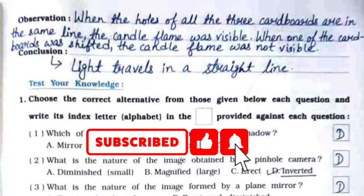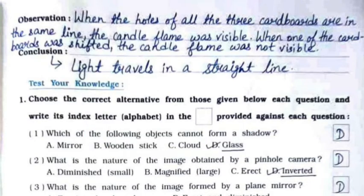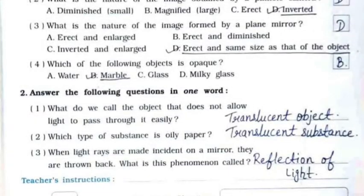Now test your knowledge. Q1 MCQs: 1. Which of the following objects cannot form a shadow? It's option D - Glass. 2. What is the nature of the image obtained by a pinhole camera? It's option D - Inverted. 3. What is the nature of the image formed by a plane mirror? It's option D - Erect and same size as that of the object. 4. Which of the following objects is opaque? It's option D - Marble.